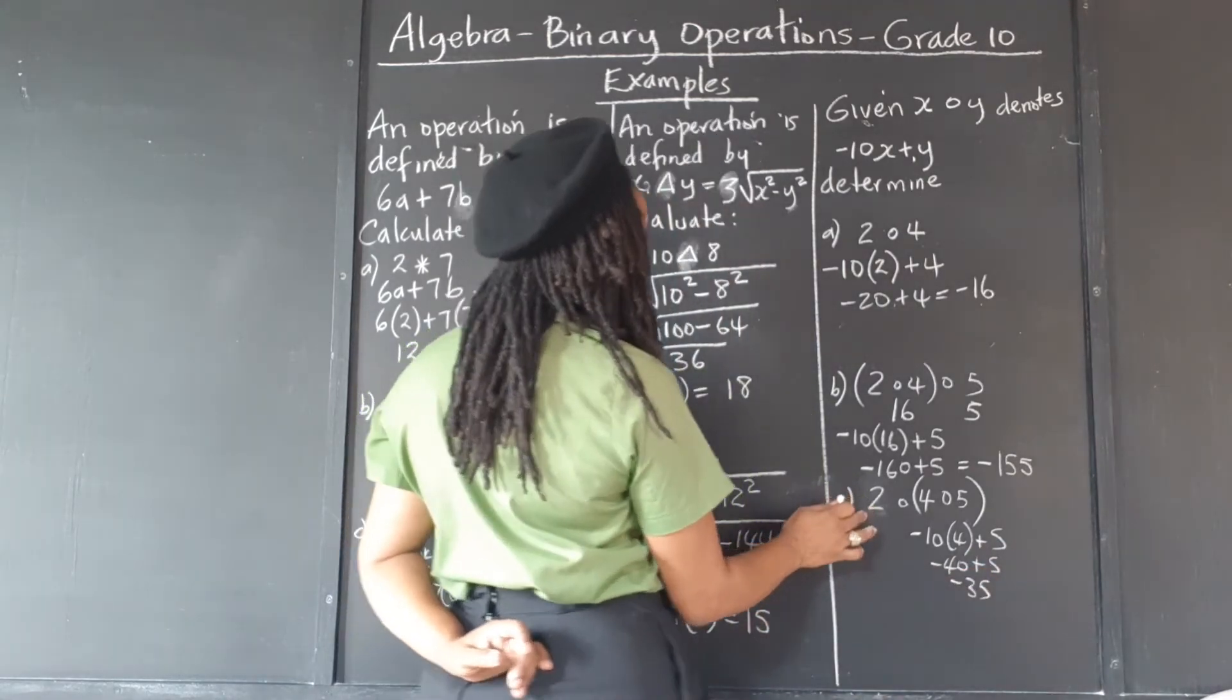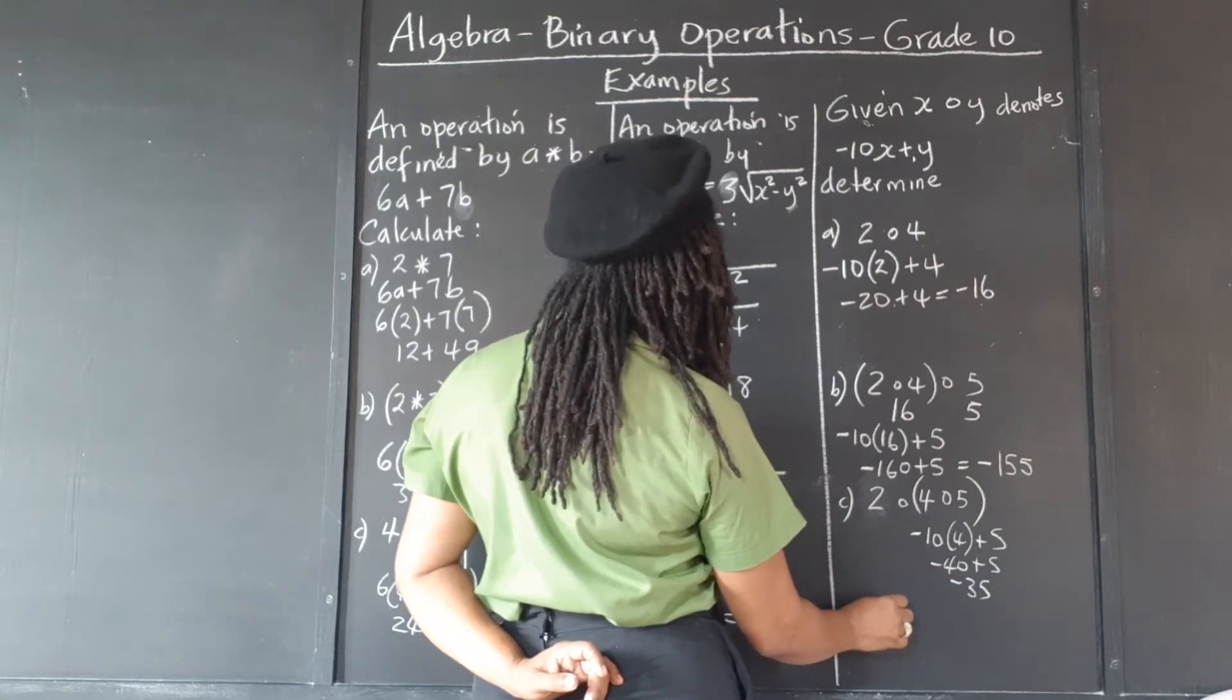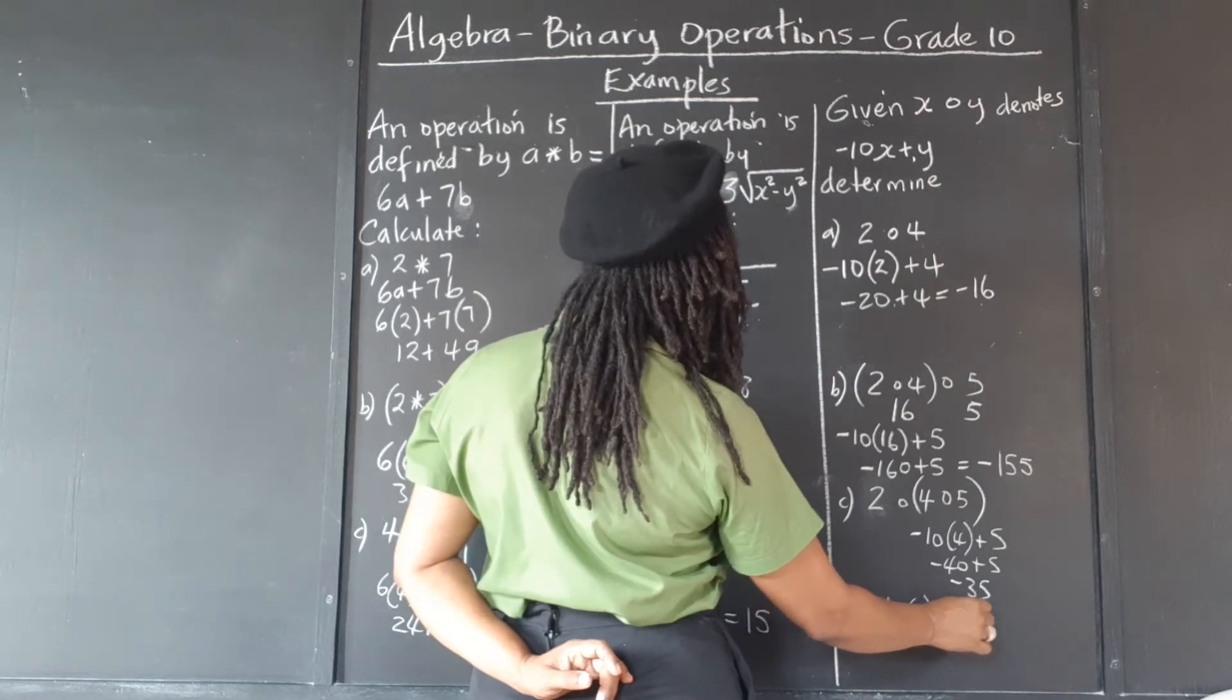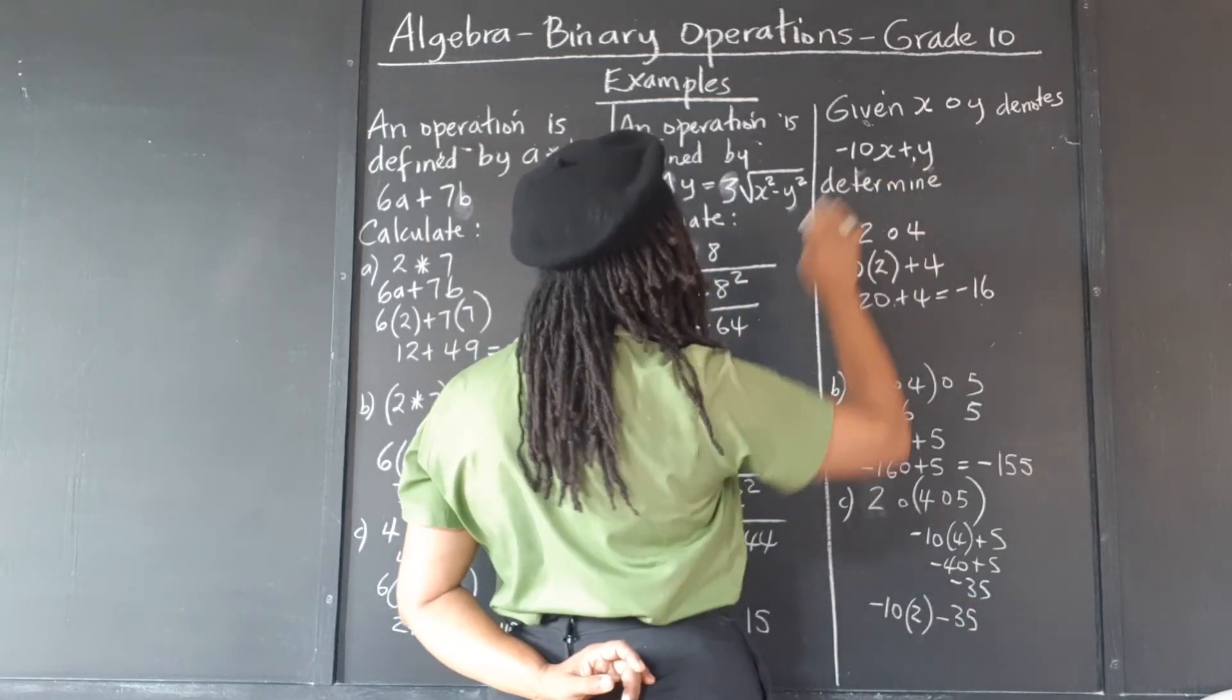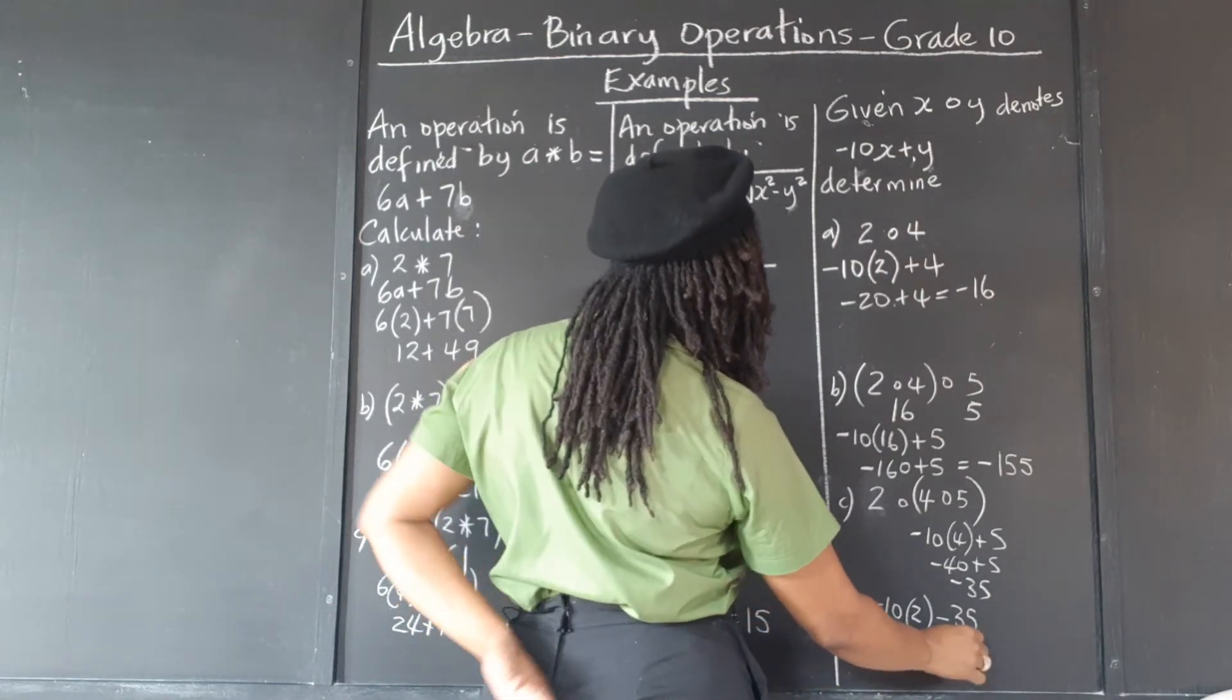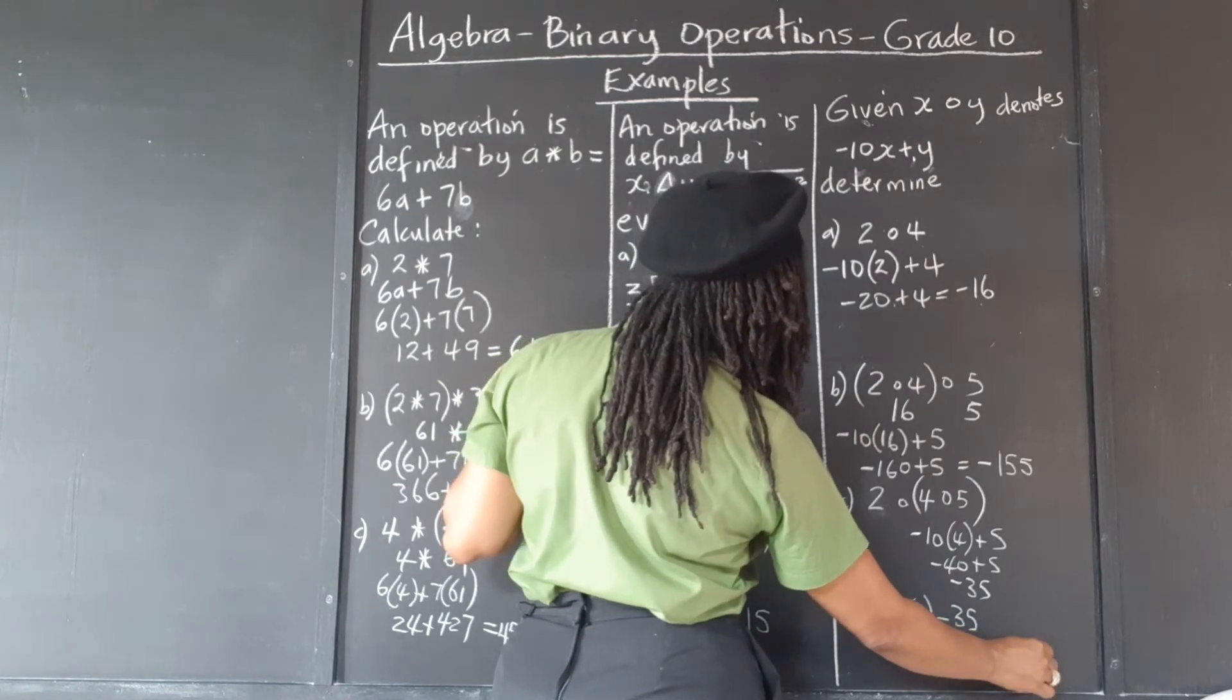So now x is 2 and y is negative 35. So negative 10 times 2 minus 35, plugging it into the operation there. Negative 20 minus 35. So the final answer is negative 55.